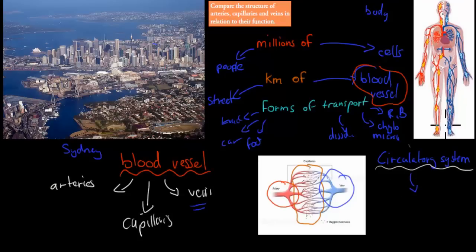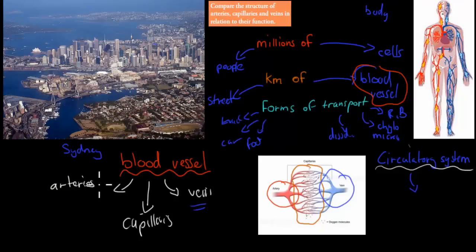It's called the circulatory system because everything moves in circles — blood gets pumped from the heart to the legs and arms, then returns to the heart again. So it all moves in a circle. What we have to do for this dot point is compare these blood vessels — arteries, capillaries, and veins — in terms of their structure, and relate that structure to their function.